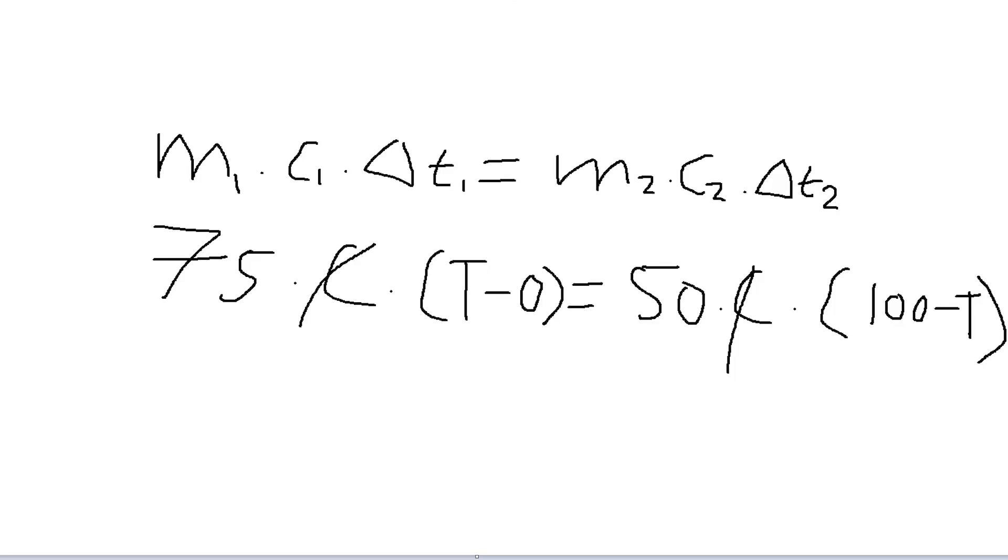We're gonna multiply it and we have 75T equals to 5000 minus 50T. We're gonna add 75 with 50T which is 125T equals to 5000, and 5000 will be divided by 125.